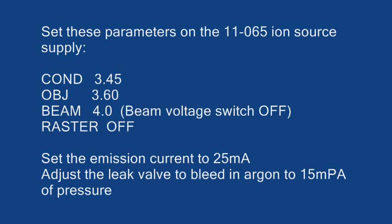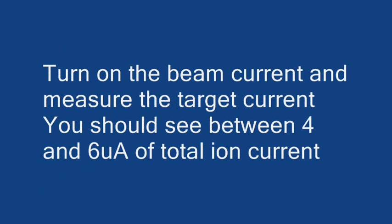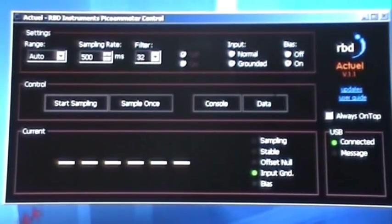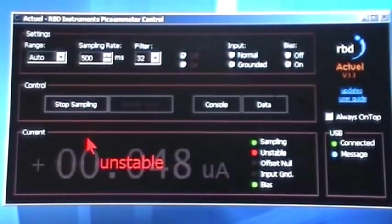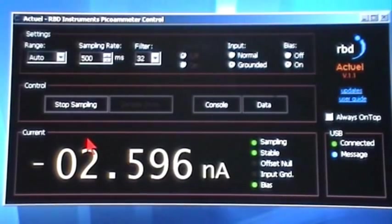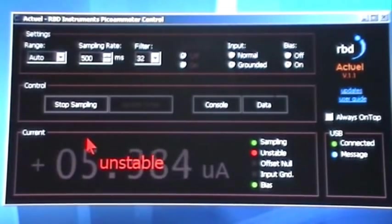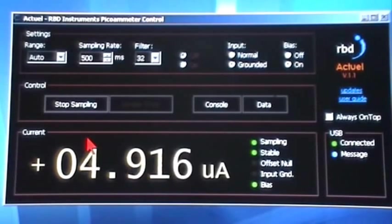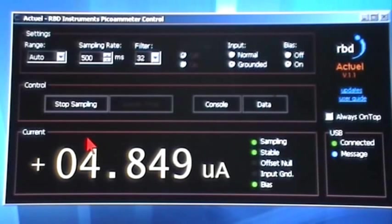So, after we've put it in and we've adjusted the focal point, we set the condenser to the nominal value for maximum current, 3.45 on the condenser, 3.6 on the objective. We turn the ion beam on and we're going to monitor the target current just to make sure that we're getting the correct current. Typically, this is going to be somewhere between 5 to 6 or 7 microamps of current. And I'm adjusting my pressure down a little bit now and that's going to reduce the current.